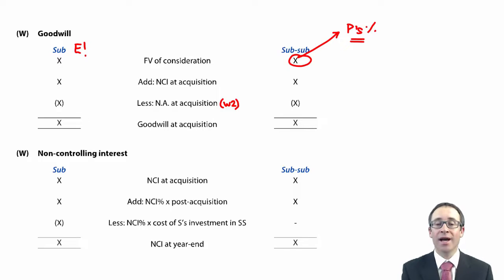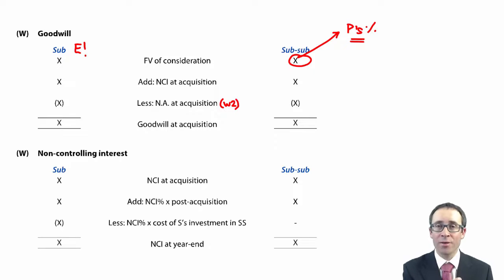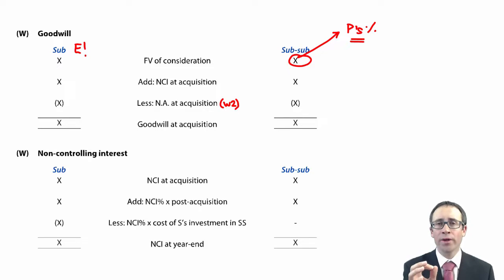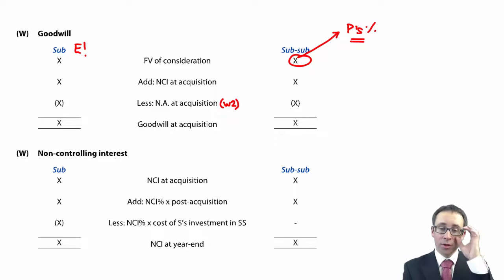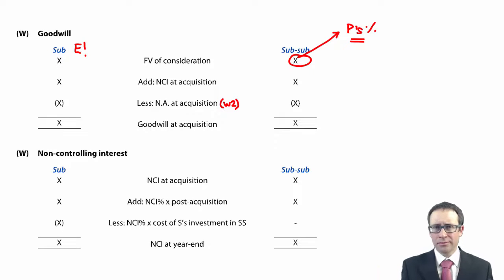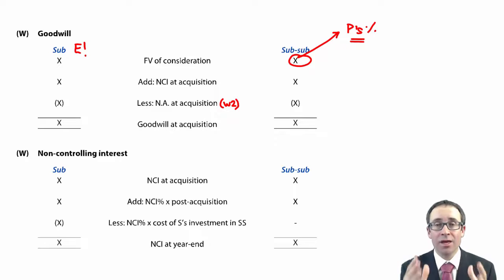You then add on your NCI at acquisition — either fair value method or proportionate share of net assets method — and everything will be based upon your effective holding. With our effective holding of 48%, that's what we would use. Then you deduct the net assets at acquisition. So there's that one number at the top of your goodwill calculation to think about; other than that, everything else isn't too bad.